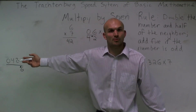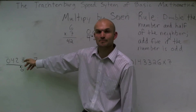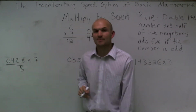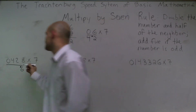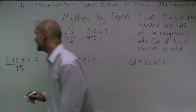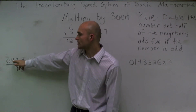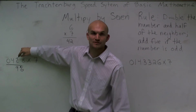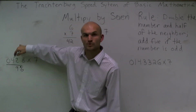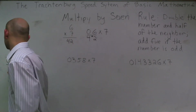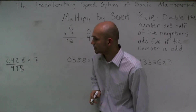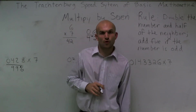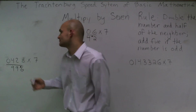Then I take 2, double it which gives me 4, add half of my neighbor 8 which is 4. So 4 plus 4 is 8, plus my carried 1, which gives me 9. Then I move over to 4. So 4 doubled gives me 8, add half of the neighbor 2, which is 1. So 8 plus 1 is 9. Then I go over to 0 — 0 doubled is 0, plus half of my neighbor 4, which is 2. So 0 plus 2 is 2. The answer to 428 times 7 is 2,996.